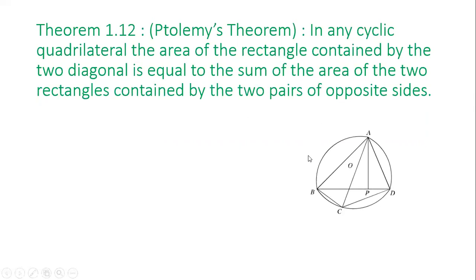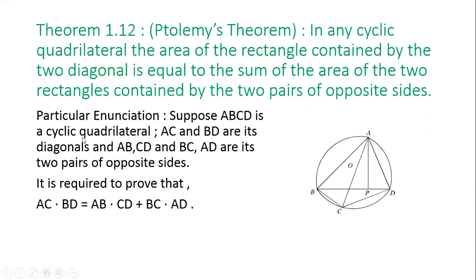At first, we draw the figure. Here, ABCD is a quadrilateral. Particular enunciation: Suppose ABCD is a cyclic quadrilateral. Here AC and BD are its diagonals.